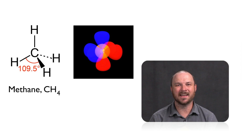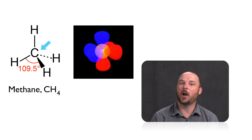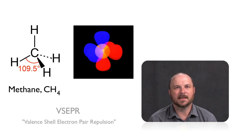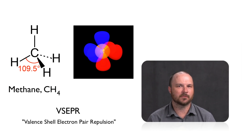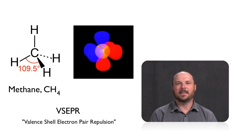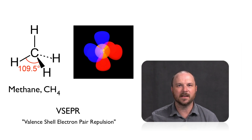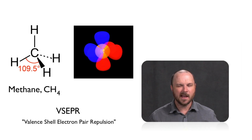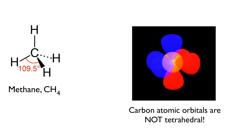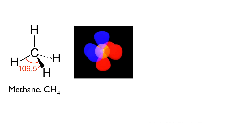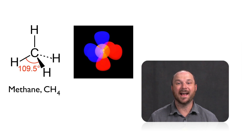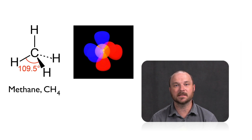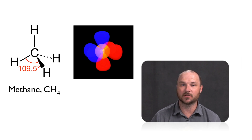Let's look at methane here on the left. This is CH4 with a carbon in the center surrounded by four hydrogens. We know from VSEPR theory that if there are four things surrounding a central atom, it should adopt what we call a tetrahedral geometry with a 109.5 degree angle roughly around the center. But if we look a little bit deeper, there's some weird stuff that goes on, mainly on the carbon. Carbon has an electron configuration of a helium core with two electrons in the 2s sublevel and two electrons in the 2p sublevel.